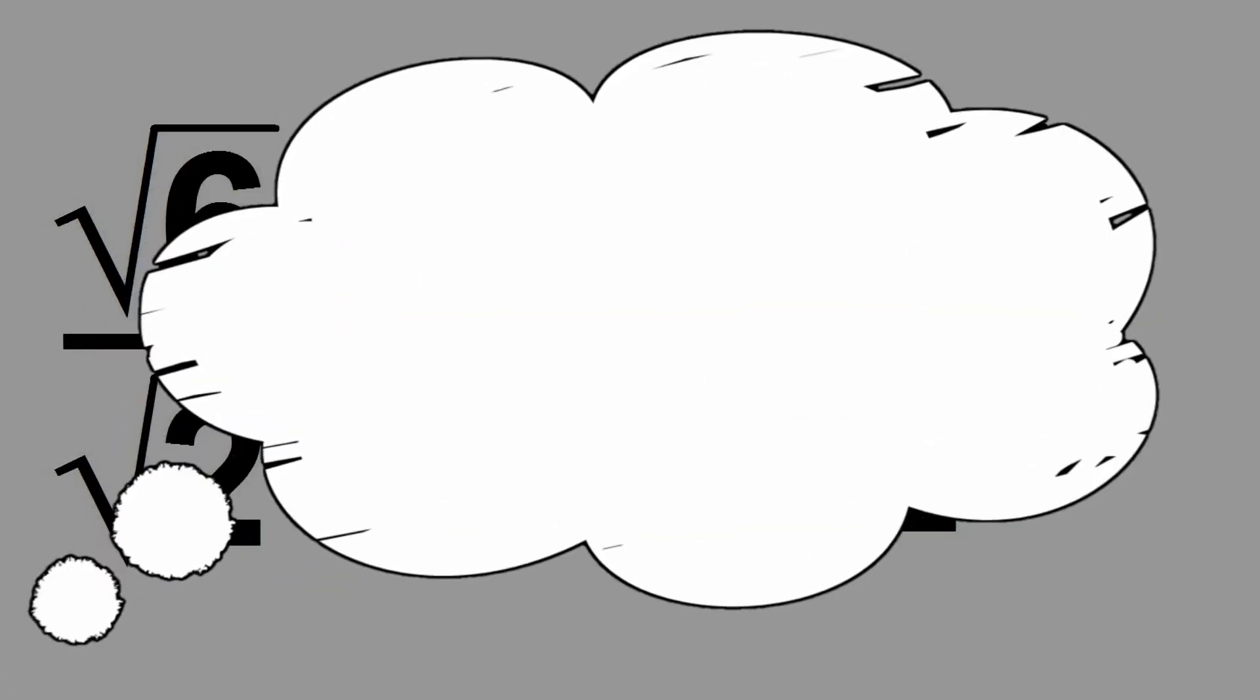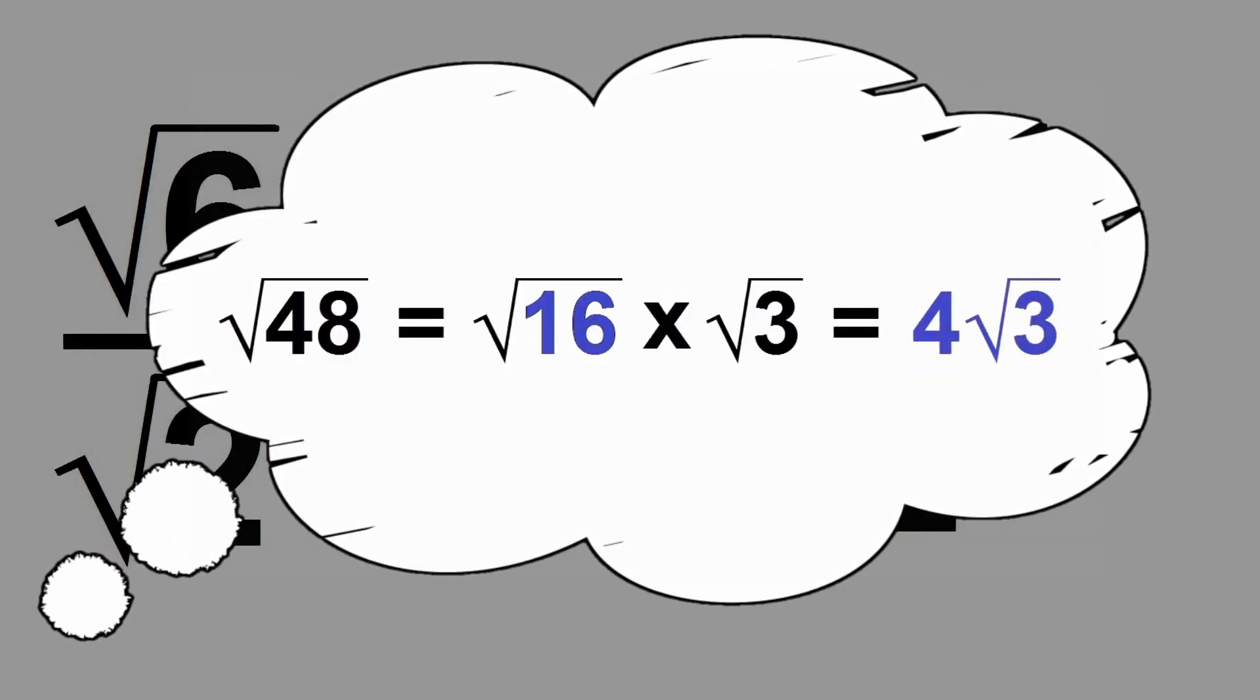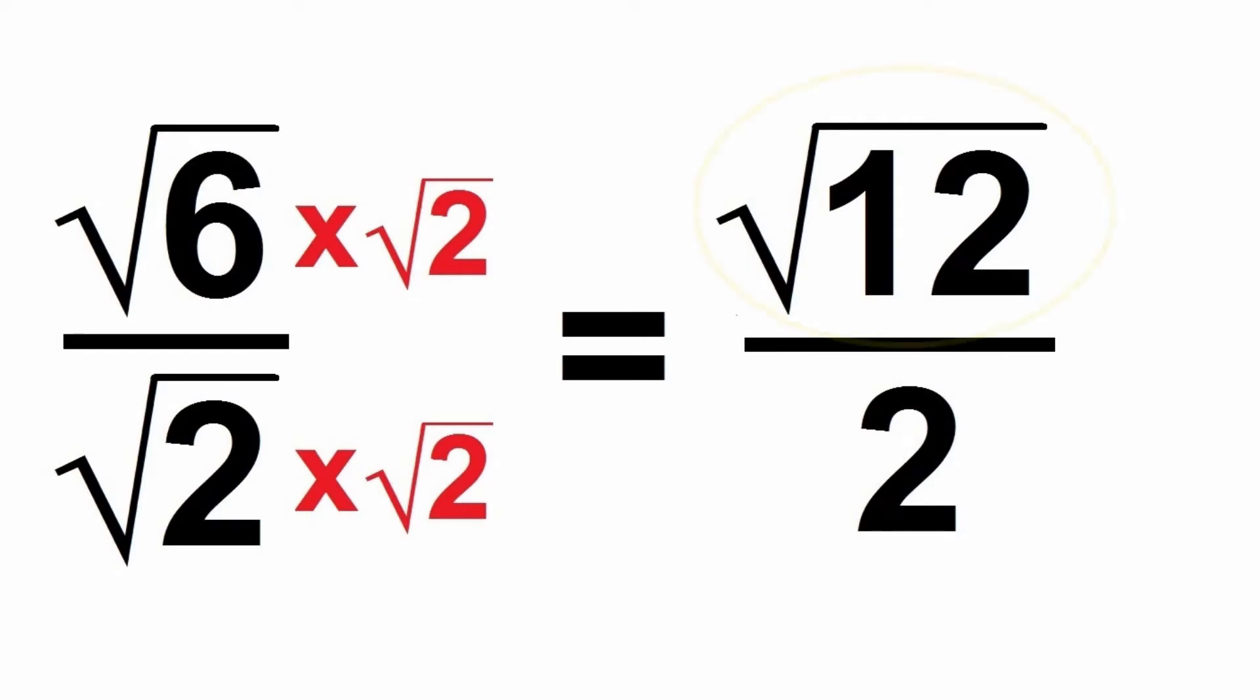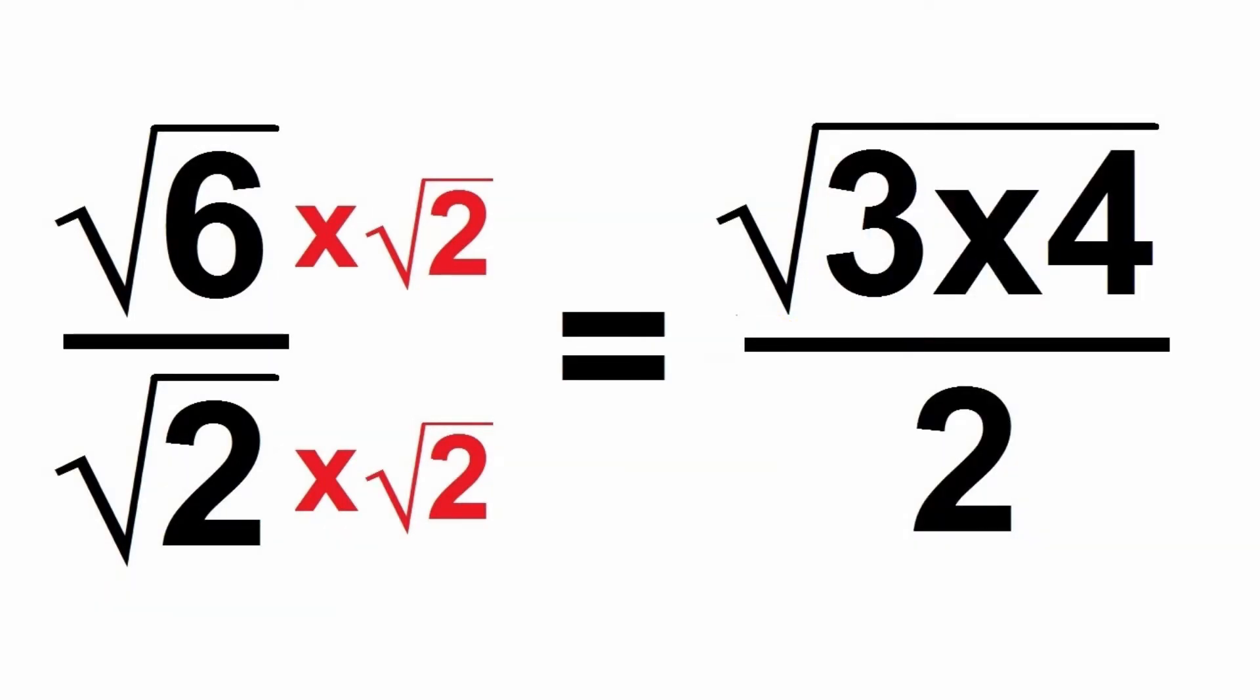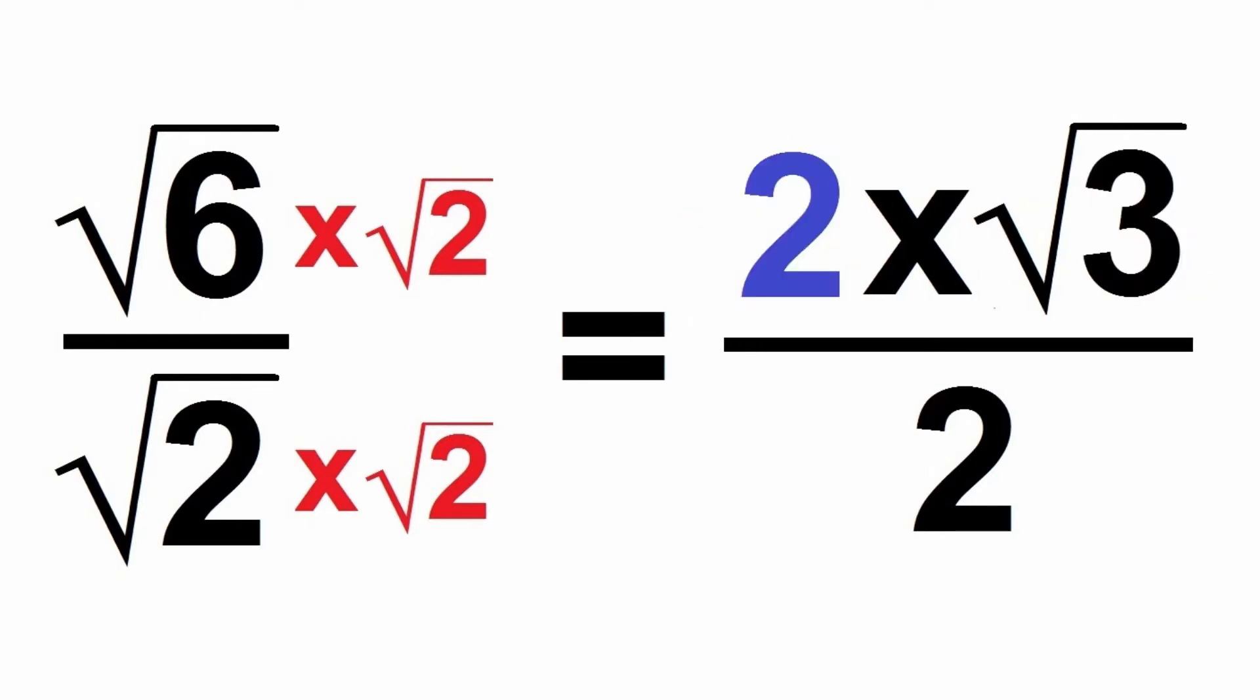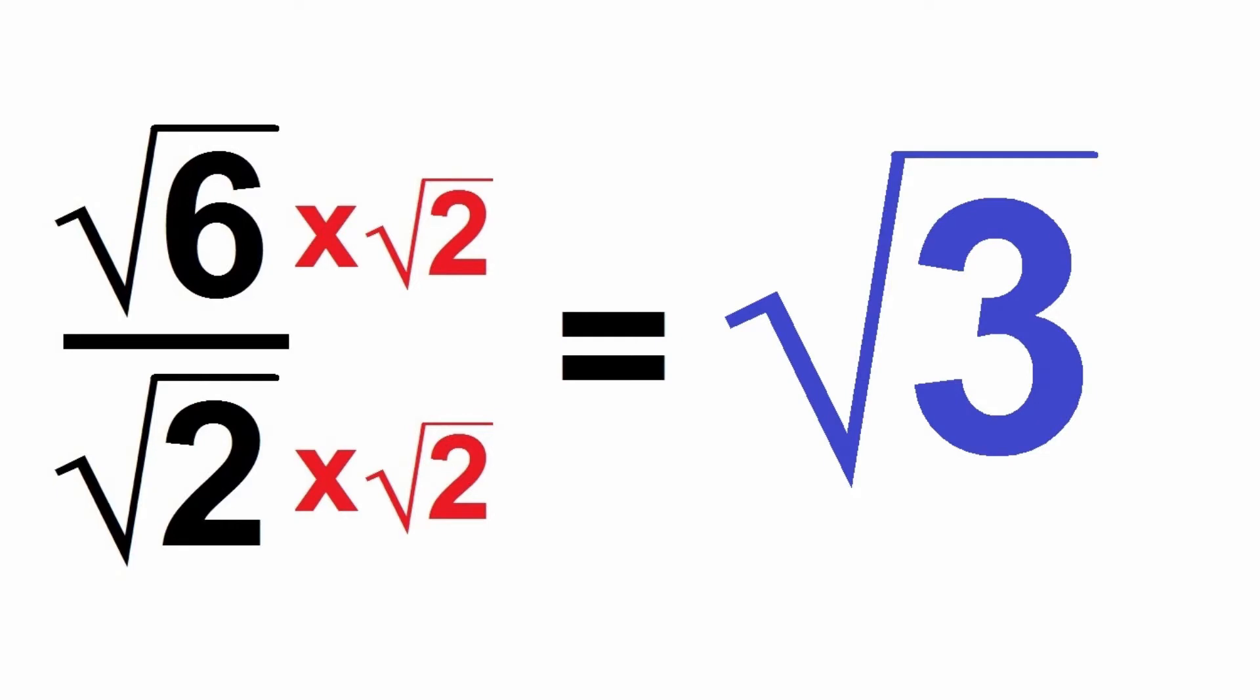But wait, remember in the last video we learned how to simplify surds? We might be able to simplify the square root of 12 in the same way. 12 has factors of 3 and 4. Well, 3 isn't a perfect square, but 4 is. If we square root 4, we'll have 2 times root 3 over 2. The 2's can cancel out, so we're left with root 3.